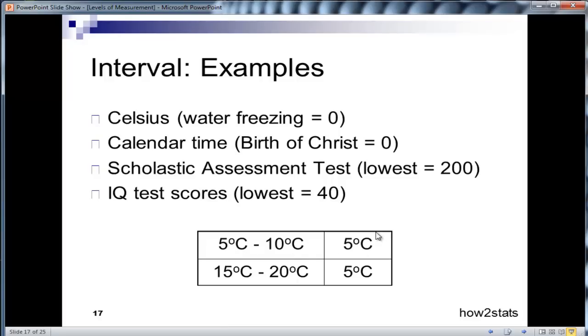It's meaningful. You can interpret this as an equal difference of 5 degrees. But what you can't do with an interval scale is say that 20 degrees is twice as warm as 10 degrees.